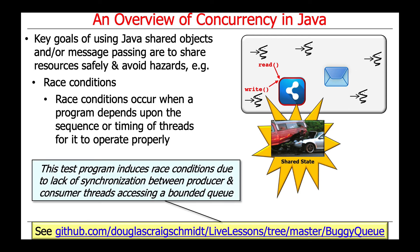To see an example of race conditions in action, you can try running a program called buggy queue, which deliberately implements a queue without synchronization and shares it between multiple threads. When you run it, chaos ensues because it's intentionally buggy. There are many examples of deliberately buggy code that clearly demonstrate these problems.